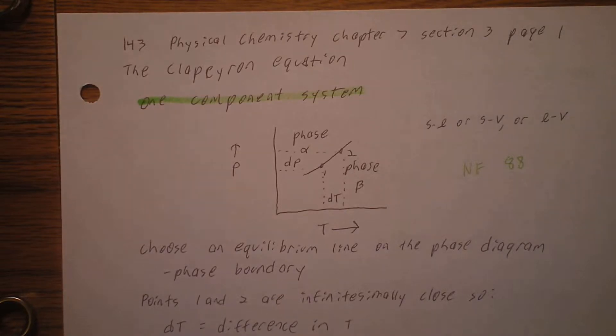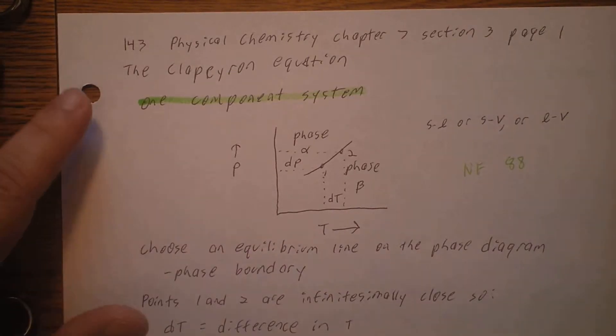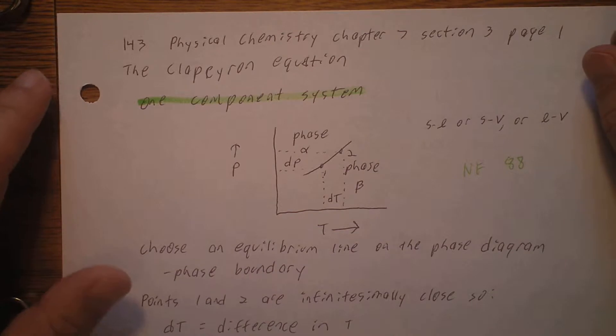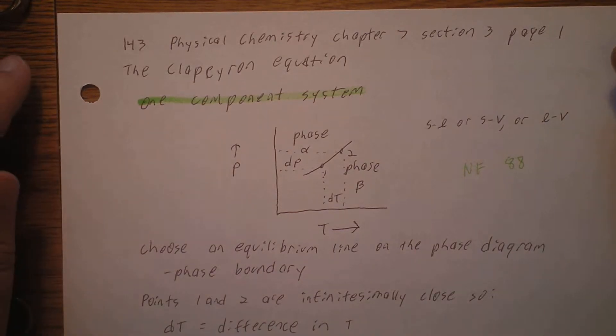Continuing on physical chemistry, chapter 7. We're beginning section 3 now. We're going to talk about the Clapeyron equation.